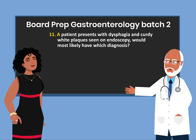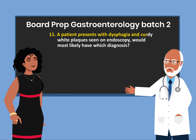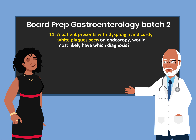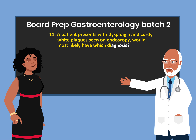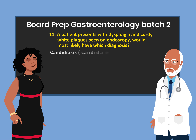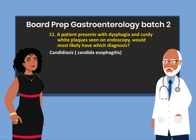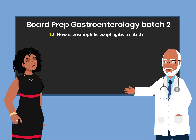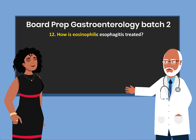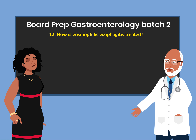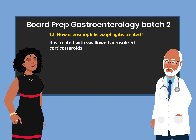Question 11: A patient presents with dysphagia and curdy white plaques seen on endoscopy. This would most likely indicate which diagnosis? Candidiasis, or candida esophagitis. Question 12: How is eosinophilic esophagitis treated? It is treated with swallowed aerosolized corticosteroids.